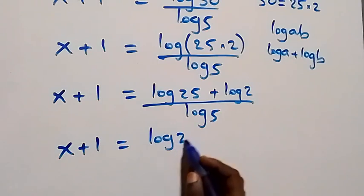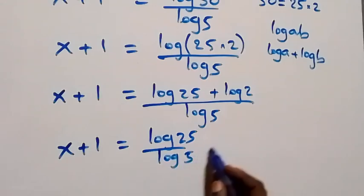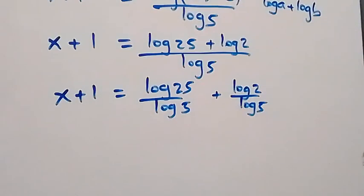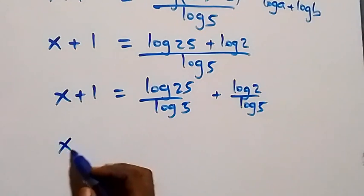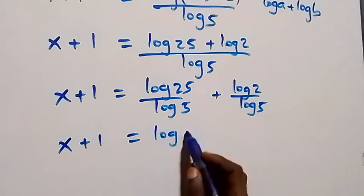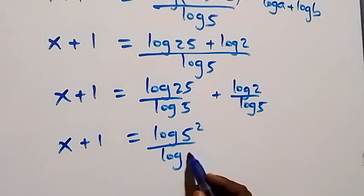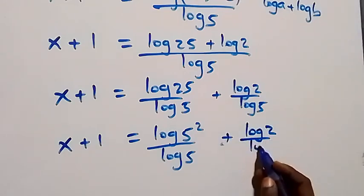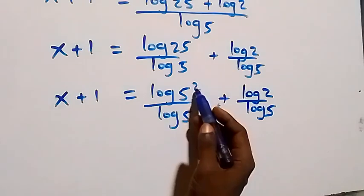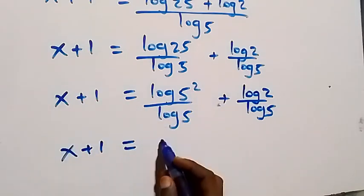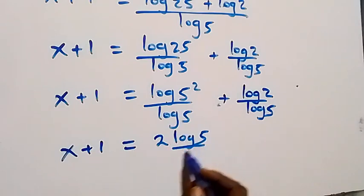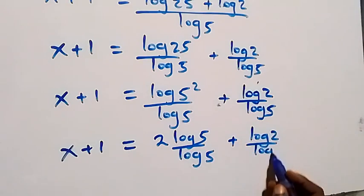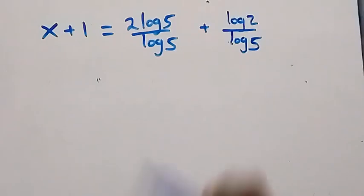Now, 25 can be expressed as 5 squared. So we have x plus one equals log of 5 squared over log 5. Applying the power law, 2 comes down, giving us 2 times log 5 over log 5.